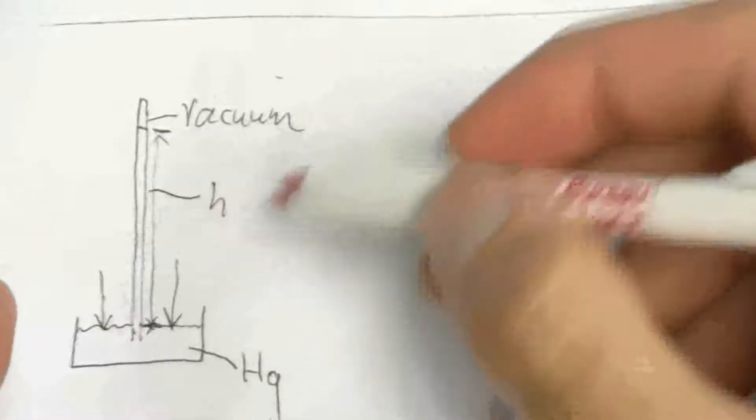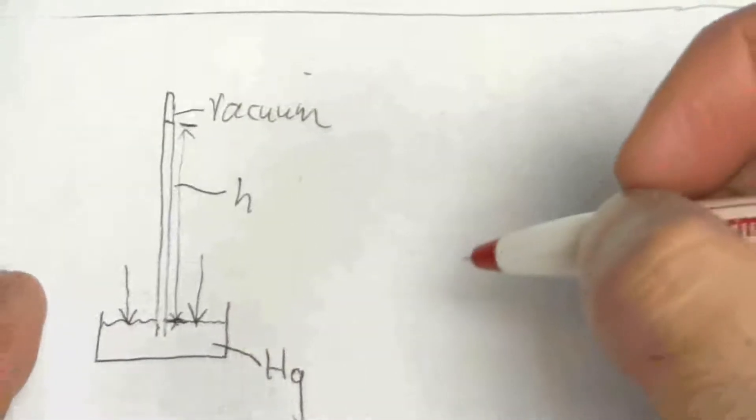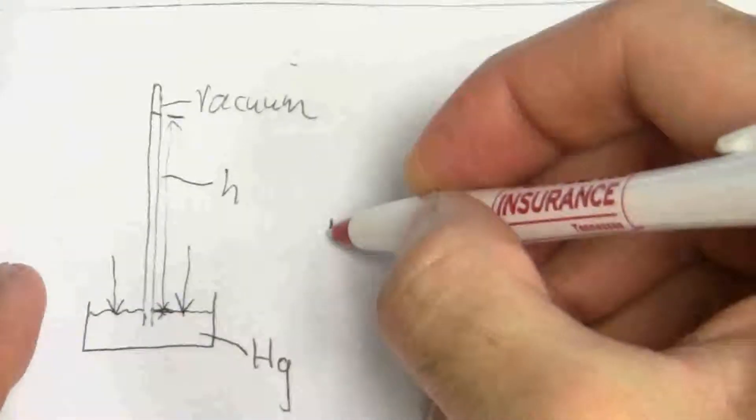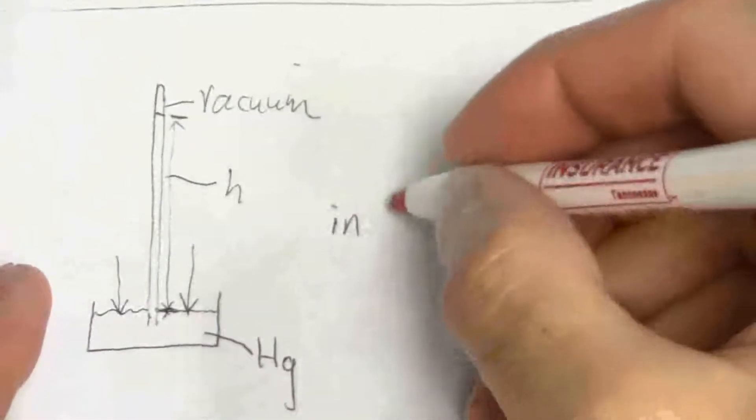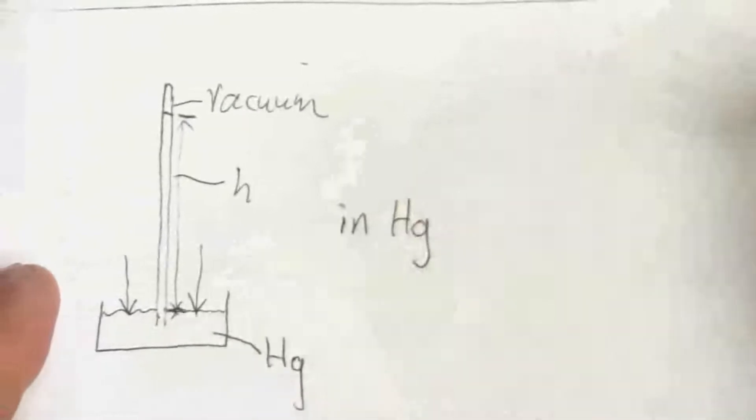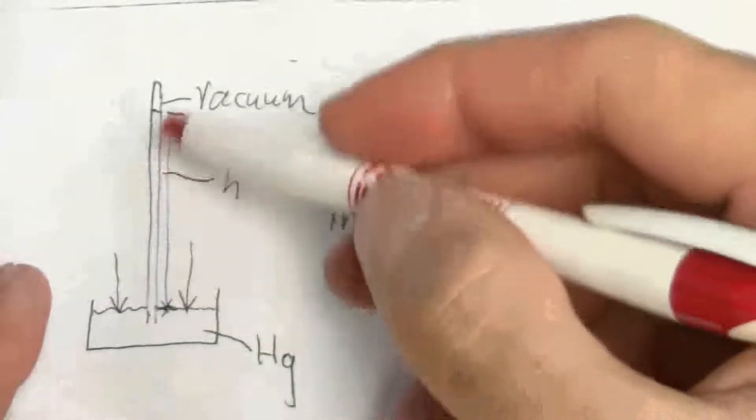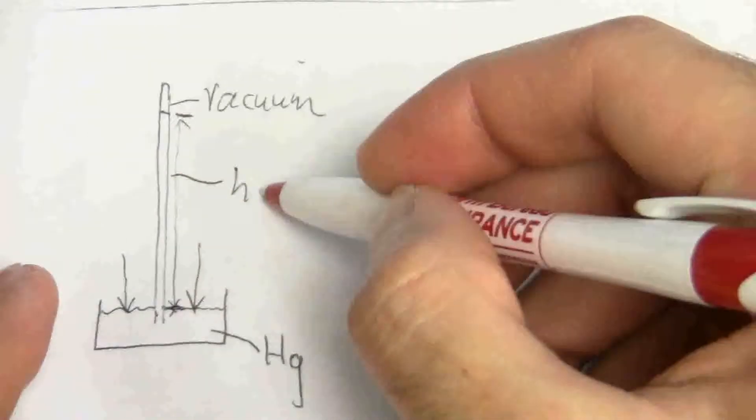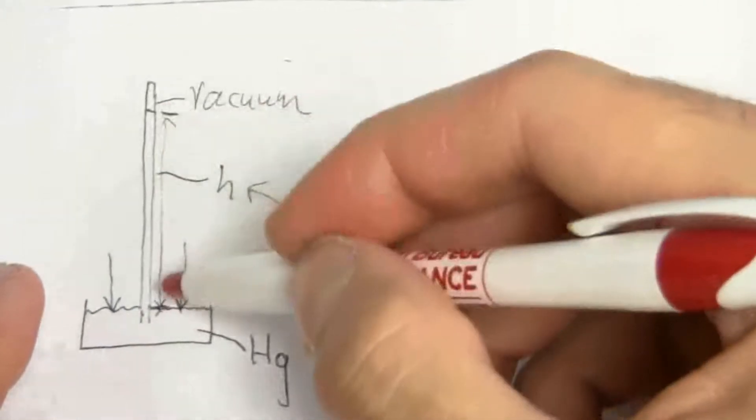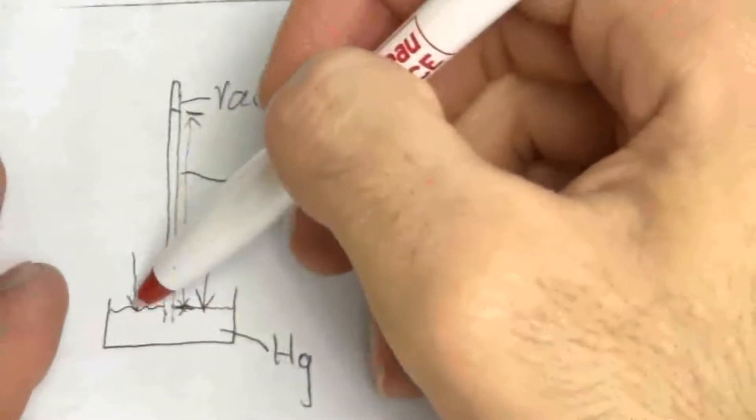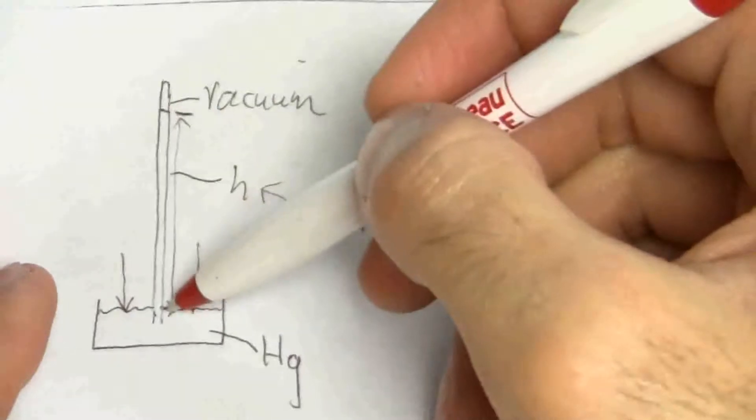And so one unit of measure for pressure, you'll often see the weather reporting the pressure as inches of mercury. That's what they're referring to. It's that height of the column of mercury when they're measuring the atmospheric pressure. So you have atmospheric pressure pushing down here,